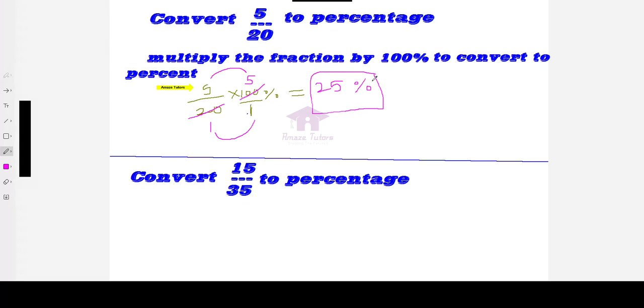This one was easy. We had 20 in the bottom and we were able to cancel out with the 100. But let's look at another example: convert 15 over 35 to percentage.